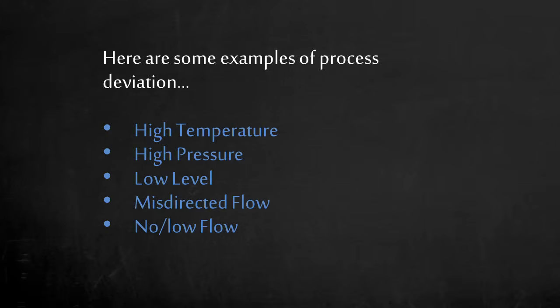Here are some examples of process deviations: high temperature, high pressure, low level, misdirected flow, and no/low flow. By having the team focus on a specific deviation, the discussion becomes more focused and productive.